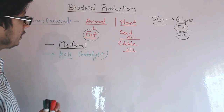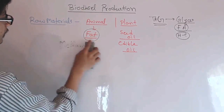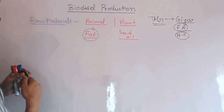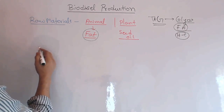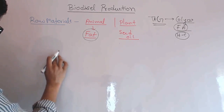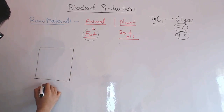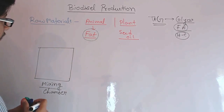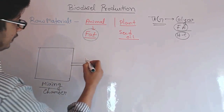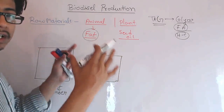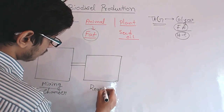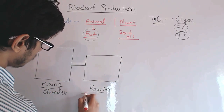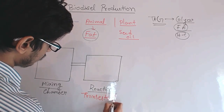Now let's talk about the process in more detail. There are different chambers for this reaction to occur properly. The first chamber is known as the mixing chamber, where we mix all our raw materials together. The second chamber, adjacent to the mixing chamber, is the reaction chamber, which is the heart of this complete biodiesel production unit.